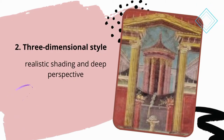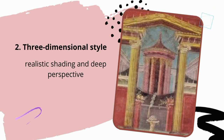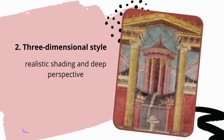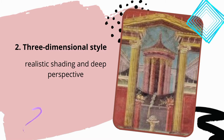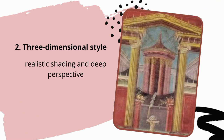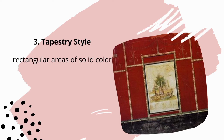The second style, named the three-dimensional style, features a scene painted with realistic shading in deep perspective, creating the illusion that one is looking through the wall at a scene beyond. In some cases, the scene is framed with architectural elements as though one were looking out from inside a building.